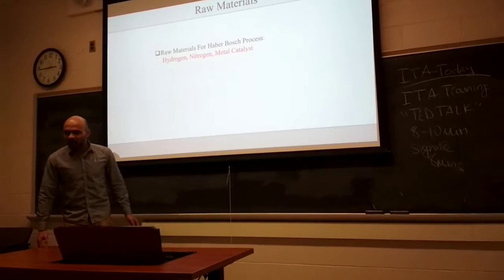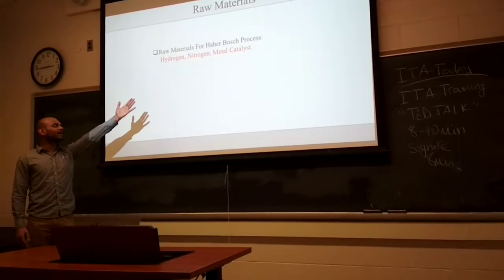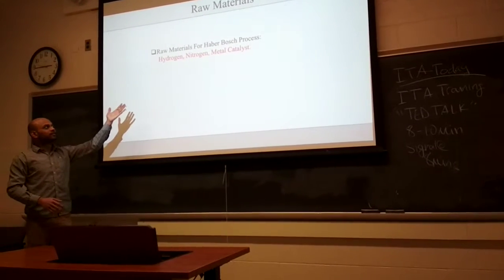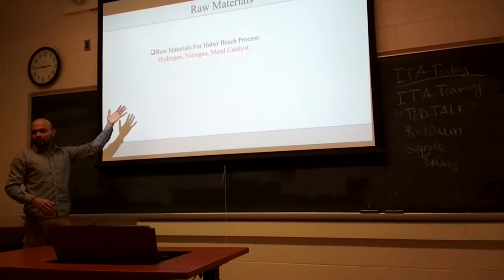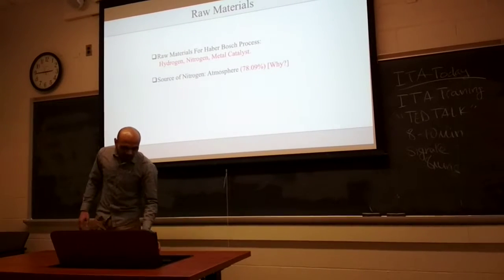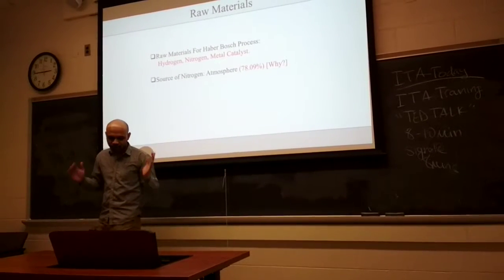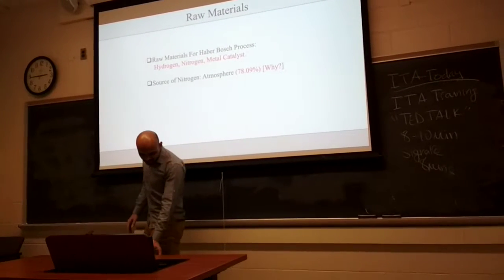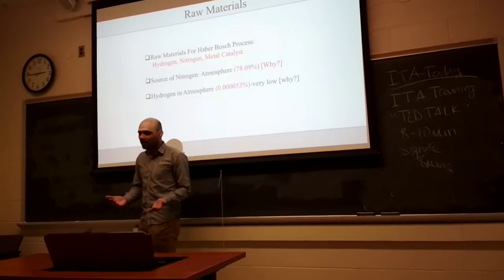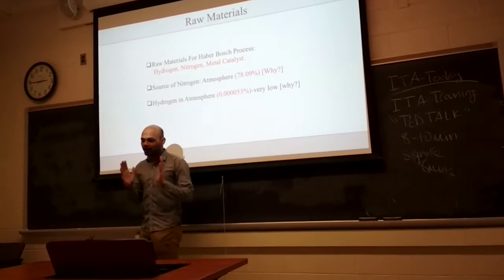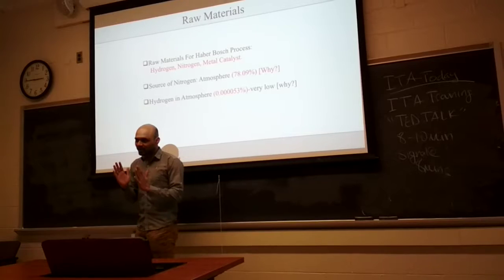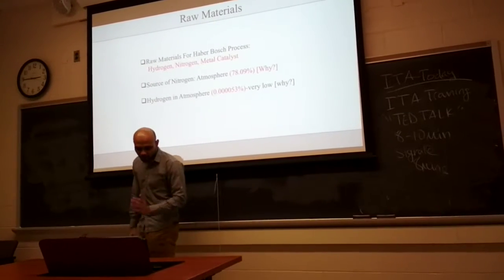What are the raw materials for ammonia? You know that hydrogen, nitrogen, and metal catalyst are needed. How can we get the raw materials for preparation of ammonia? Hydrogen is not too easily available, but nitrogen — in our nature, we know 79% of our atmosphere is nitrogen. Why is nitrogen so high? The percentage of hydrogen is very low in our atmosphere, so we need to figure out other ways to abstract or synthesize hydrogen.